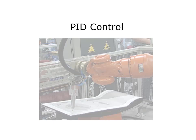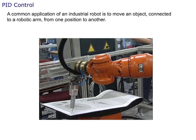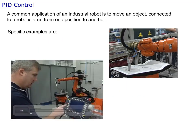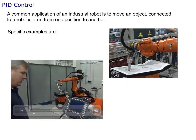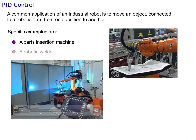Welcome to the video, PID Control. A common application of an industrial robot is to move an object connected to a robotic arm from one position to another. Specific examples are a parts insertion machine and a robotic welder.